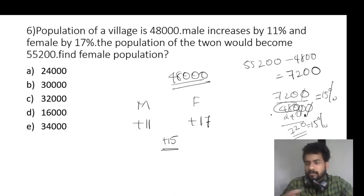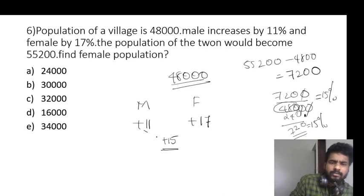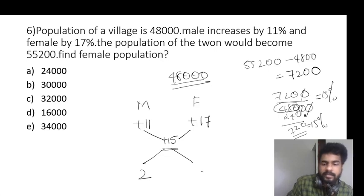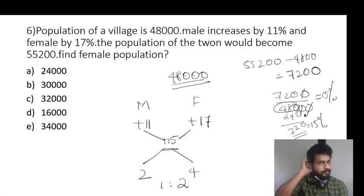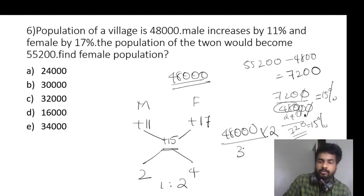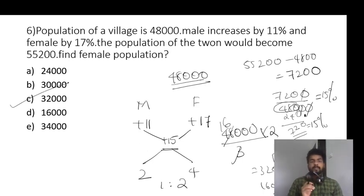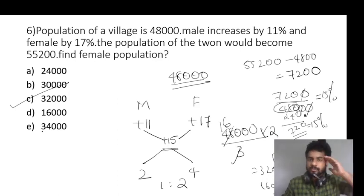So with 48,000 and 5 percentage approach — male to female ratio is 1 to 2. Population solved using the same allegation method. So this is your Bibin signing off.